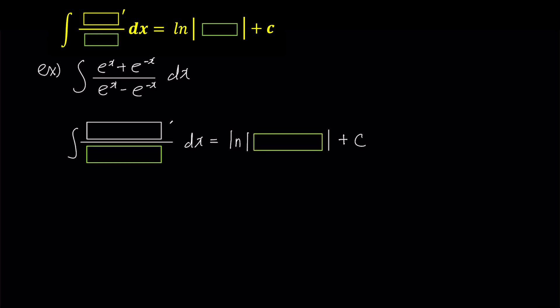Look at this example. If we differentiate e to the power of x minus e to the power of negative x in the denominator, what do we get? That's right. We get e to the power of x plus e to the power of negative x, which is located in the numerator. So we can put e to the power of x minus e to the power of negative x in the green box, and e to the power of x plus e to the power of negative x in the box prime. We can also put e to the power of x minus e to the power of negative x in the right-hand green box. This gives us the answer.